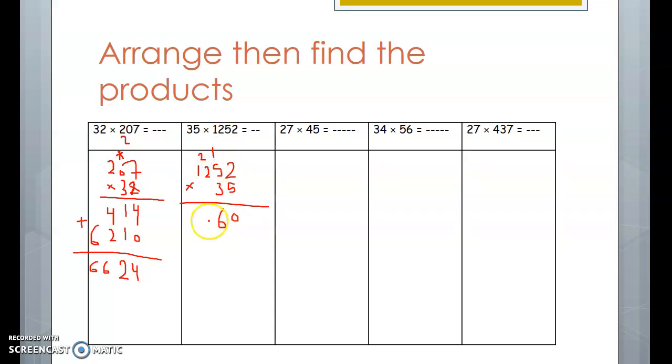5 times 2, 10. Plus 2 equals 12. 5 times 1, 5. Plus 1 equals 6. We erase the numbers that are written up. We cross out 5.